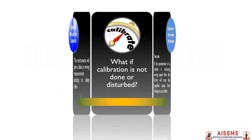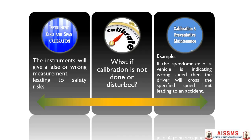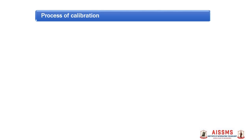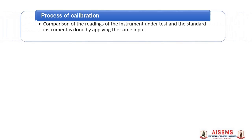So what if the calibration is not done or it is disturbed? Then the instruments will give a false or wrong measurement leading to safety risks. For example, if the speedometer of a vehicle is indicating wrong speed, then the driver will cross the specified speed limit, which will lead to an accident. So the process of calibration of a measurement instrument is very much important.